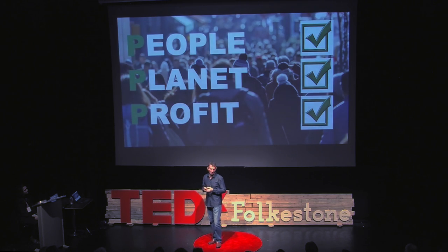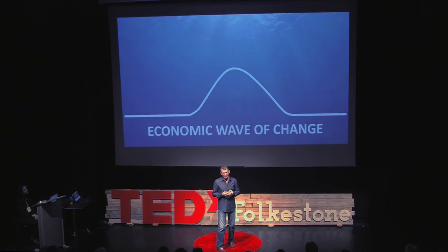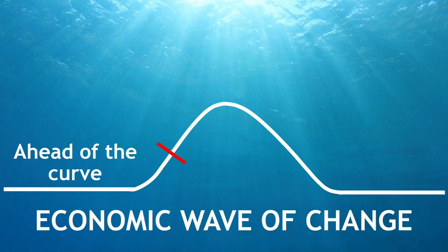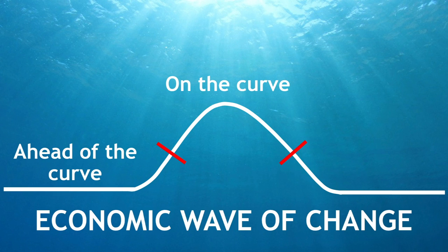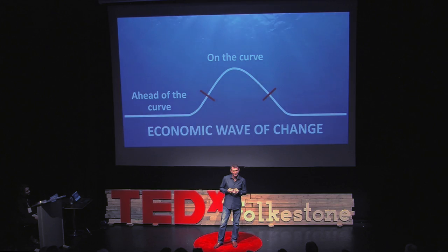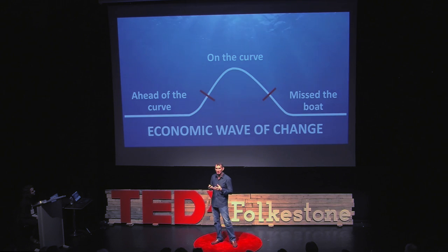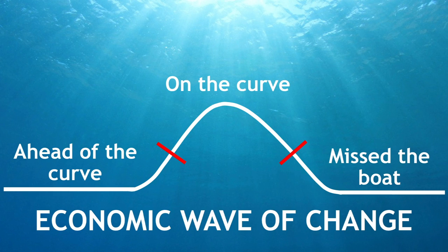And the winners of this new economic model? We've got the economic wave of change. First, those that are ahead of the curve — these people will become highly successful as they catch the early wave. Then we've got those that are on the curve — these people also do very nicely as they adopt the model with the mass market. And then we've got those that have missed the boat. You'll find these people selling palm oil products — buy one, get 20 free — hoping for a rock dweller to walk by.